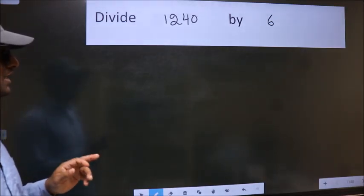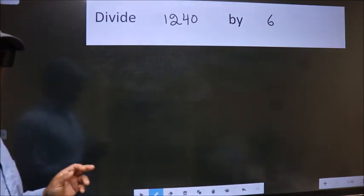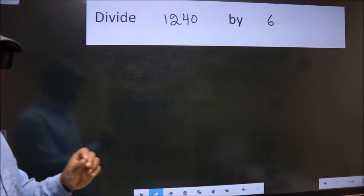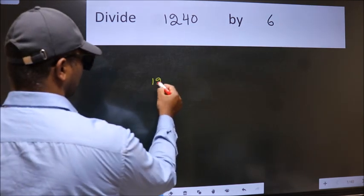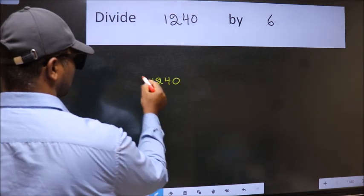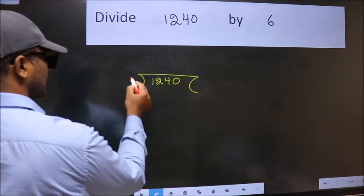Divide 1240 by 6. To do this division, we should frame it in this way. 1240 here, 6 here.